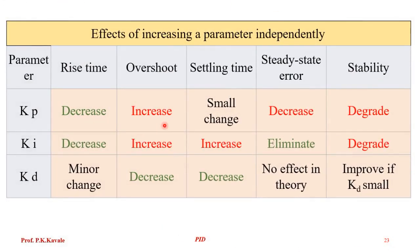The entire summary on dynamic response for K_P, K_I, and K_D: Rise time — decreases, decreases, minor changes. Overshoot — increases, increases, decreases. Settling time — small changes, increases, decreases. Steady state error — decreases, eliminates, no effect. Stability — degrades, degrades, improves with K_D. This is the complete summary of PID control independently showing the effect on rise time, overshoot, settling time, steady state error, and stability.